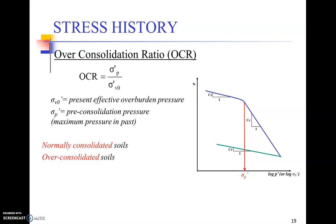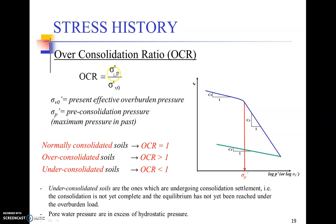We quantify this in the form of OCR, which is the ratio of the pre-consolidation pressure divided by the present effective overburden pressure. OCR equal to one means a normally consolidated soil; greater than one is over-consolidated; and less than one is under-consolidated. Under-consolidated soils are those which are still undergoing consolidation settlement, where equilibrium has not yet been reached under the overburden load and pore water pressures are in excess of hydrostatic pressure.